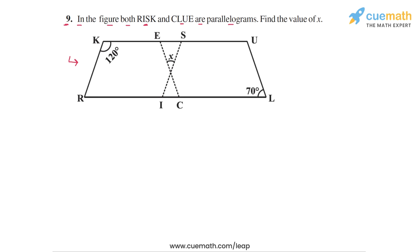So let me highlight both of these quadrilaterals for you. RISK is this quadrilateral R, I, S, and K, and CLUE would be C, L, U, and E. So this is the quadrilateral CLUE.